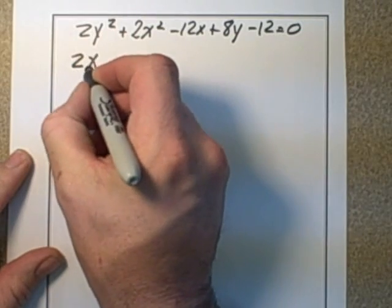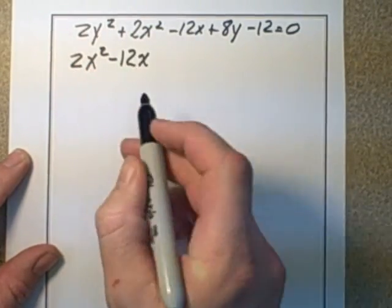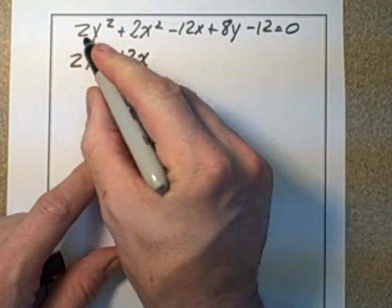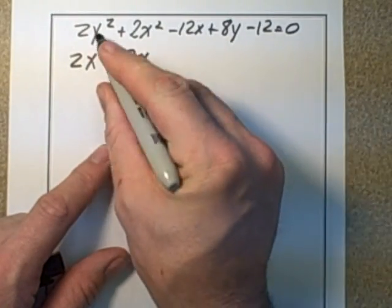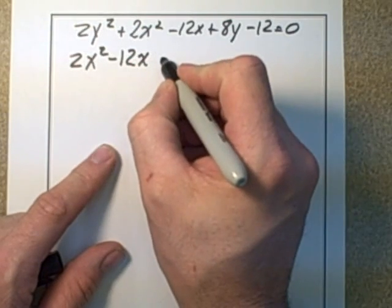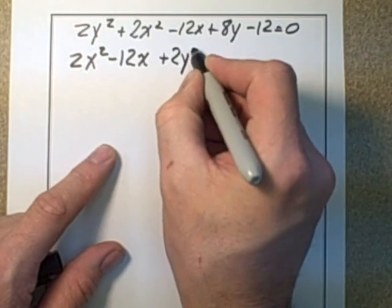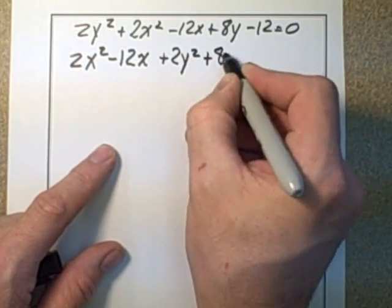So that would be 2x squared minus 12x here. We're going to group the y's then next. Remember these have to be the same to be a circle. The coefficient in front of the y squared and the coefficient in front of the x squared. So this is plus 2y squared plus 8y.